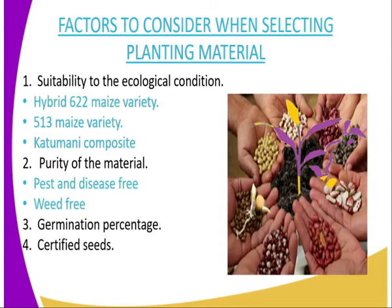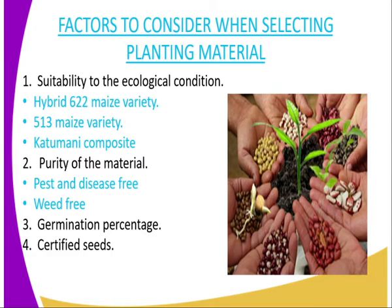Now let us look at factors to consider when selecting planting material. One of the factors is suitability to the ecological condition. For example, hybrid 622 maize variety, 513 maize variety, and Katumani are suitable for different ecological conditions. In the highlands, where we have a lot of rain, we can use hybrid 622 maize variety. In medium altitude, we use 513 maize variety, and in the low altitude — for example in Mombasa — we can use the Katumani composite.